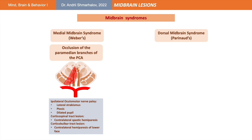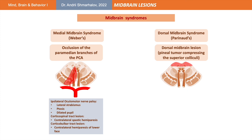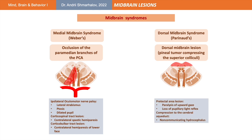The dorsal midbrain syndrome is not a result of a vascular lesion. It is associated with compression over the superior colliculi, usually due to a pineal tumor. This lesion involves the oculomotor nuclei and may result in paralysis of upward gaze as well as different pupillary abnormalities, including loss of the pupillary light reflex. Sometimes compression over this region may cause interruption of the cerebral aqueduct circulation, resulting in non-communicating hydrocephalus.